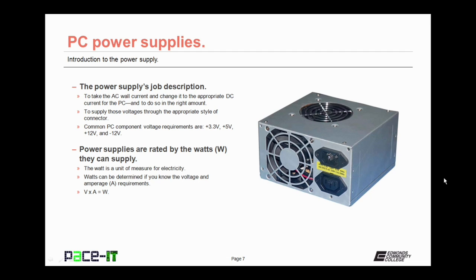The common voltages that a PC requires are 3.3 volts, 5 volts, 12 volts, and negative 12 volts. Power supplies are rated by the watts that they can supply. The watt is a unit of measurement for electricity. Watts can be determined if you know voltage and amperage — the formula for that is volts times amperage equals watts.